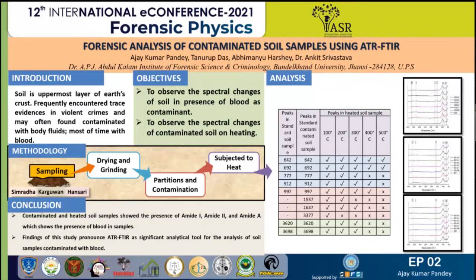At 300°C, the peak related to the amide I region also disappeared, and only the amide II region could be identified in the heated samples. As soon as the temperature reached 400°C, the peaks completely disappeared and we were totally unable to tell whether the sample was contaminated with biological fluid or not. The conclusion was that blood in the soil can be detected up to around 300°C, after which the disappearance of peaks indicates that the blood got charred rapidly, with any remaining components completely dominated by the soil matrix.